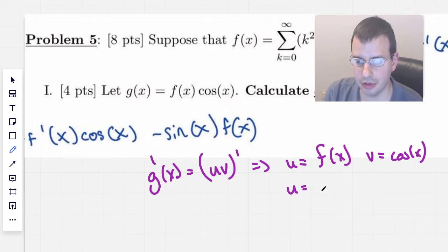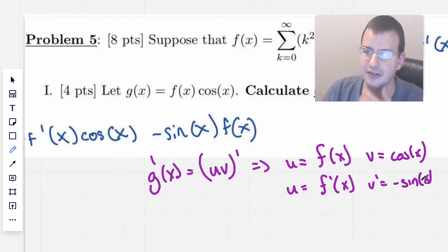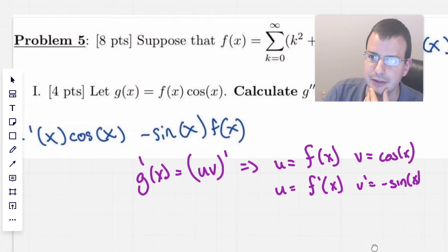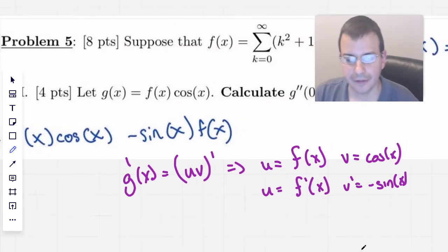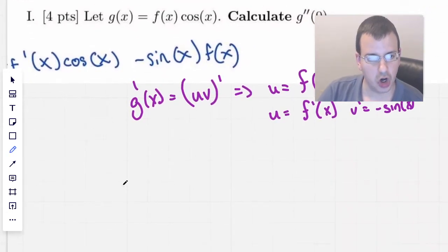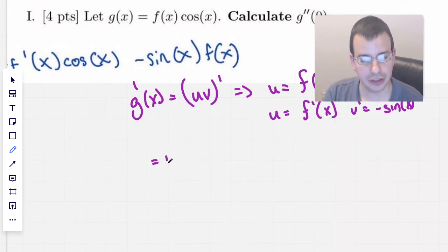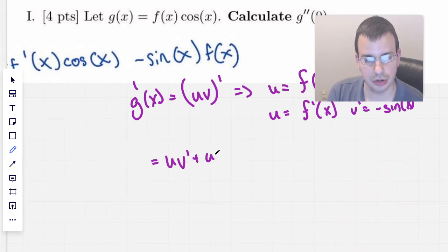u prime will be f prime of x. v will be cosine of x, and v prime will be negative sine of x. I think it's negative sine of x. Or is it positive? No, it's negative sine of x. I always get those confused.